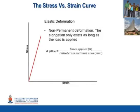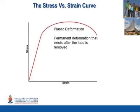The stress-strain curve is composed of two distinct areas. The first area is the linear region of the graph where elastic deformation occurs. In this portion of the graph, the stress is directly proportional to the strain and thereby confirms Hooke's law. The stress at any point of the graph can be calculated as the instantaneous force applied to the sample divided by the initial cross-sectional area of the sample. The moment the stress exceeds the elastic limit, plastic deformation occurs and the sample will permanently deform.